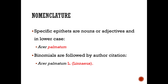Specific epithets are nouns or adjectives and are written in lowercase. For Acer palmatum, the specific epithet is palmatum, and the entire species name is Acer palmatum. Calling that second word 'species' is a misnomer — it's correctly called the specific epithet. Binomials are sometimes followed by an author citation; Acer palmatum was named by Linnaeus, and this citation can change if the plant name changes.